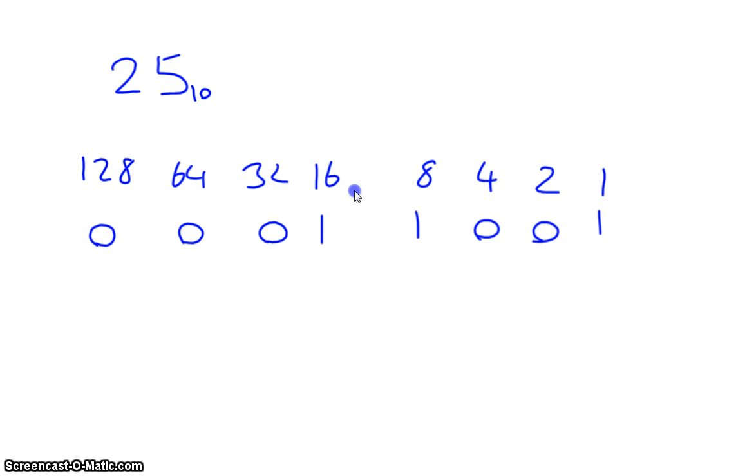We'll do one more. We'll take a number of 179. So 128, no 64s, add 32. So 128 plus 32 is 160, which means we've got 19 left over. Here's our 16, 17, 18, 19.